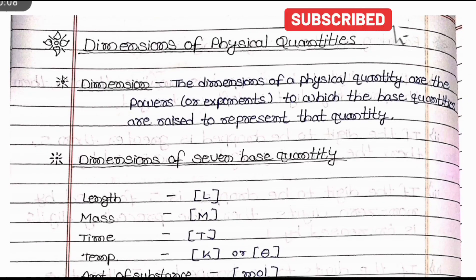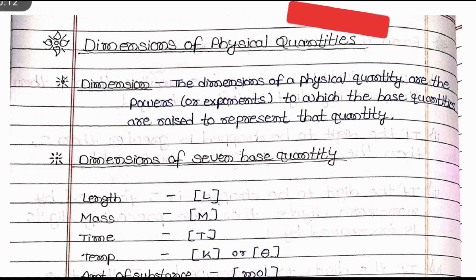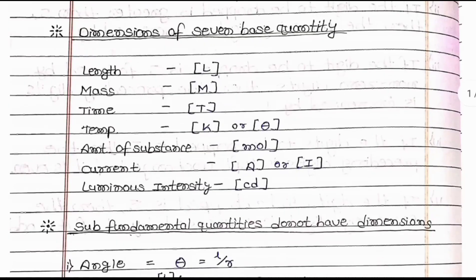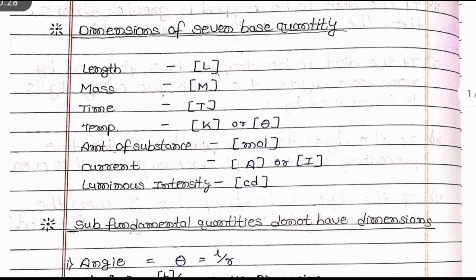Hello everybody, welcome to the book and notes. This video is for Class 11, Chapter 2, Units and Dimensions, and this is the third part where dimensional quantity will be discussed. First, the definition: the dimension of a physical quantity are the powers to which the base quantities are raised to represent that quantity.